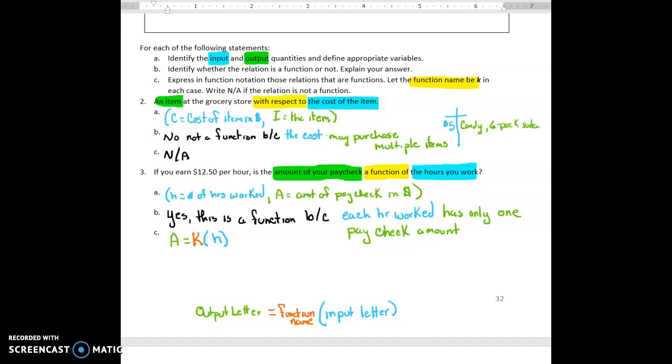So when we read this, because when we have the expanded form of function notation, it tells us the story. It says that the amount, A, is a function of the number of hours worked.